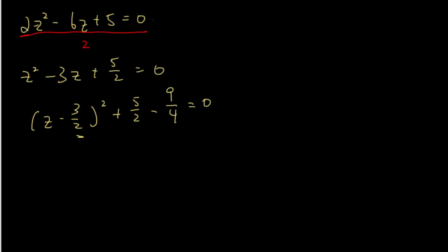Now, so that will be z minus 3 over 2 square plus 1 over 4 equals 0.